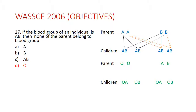Question 27: If the blood group of an individual is AB, then none of the parents can belong to blood group O. We know there are four blood groups: A, B, AB, and O. If a person is in blood group AB, there is no way any of their parents would belong to blood group O.